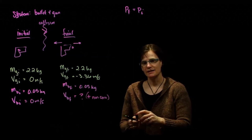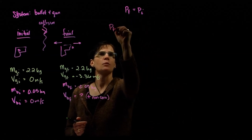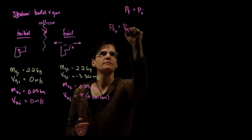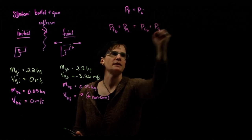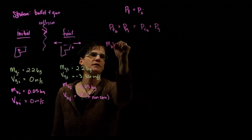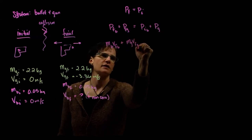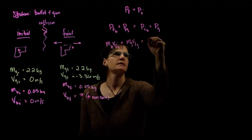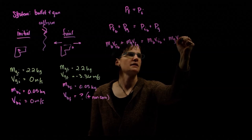Let's look at the momentum relationship — the conservation. Final momentum is made up of the final momentum of the bullet plus the final momentum of the gun. The initial momentum is made up of the initial momentum of the bullet plus the initial momentum of the gun. Expanding: mass of bullet times final velocity of bullet, plus mass of gun times final velocity of gun, equals mass of bullet times initial velocity of bullet, plus mass of gun times initial velocity of gun.